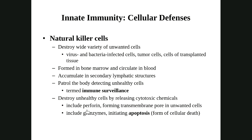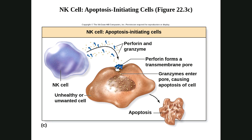NK cells kill using two chemicals: perforins and granzymes. Perforins punch holes — they form pores in the membrane of the bad cell, causing it to ooze its contents out. Granzymes are inserted into the cell and trigger self-destruct — they cause the cell to undergo apoptosis, its normal programmed death, before it's ready. So granzymes essentially trick the infected or cancerous cell into killing itself early, which gets rid of it. Perforins make the pore, granzymes enter and lead to the cell's death.